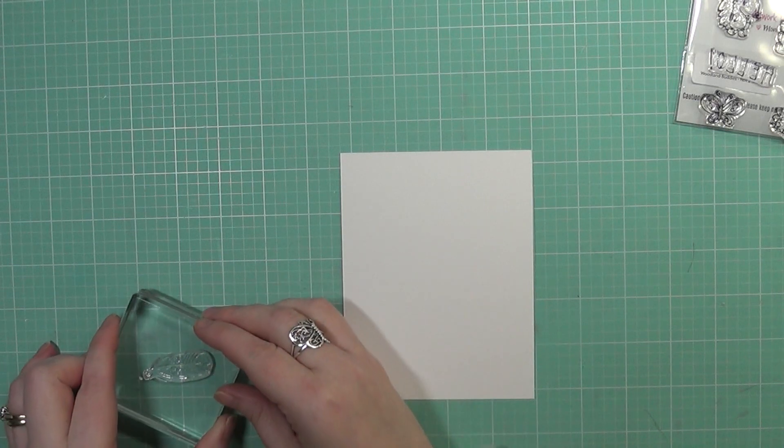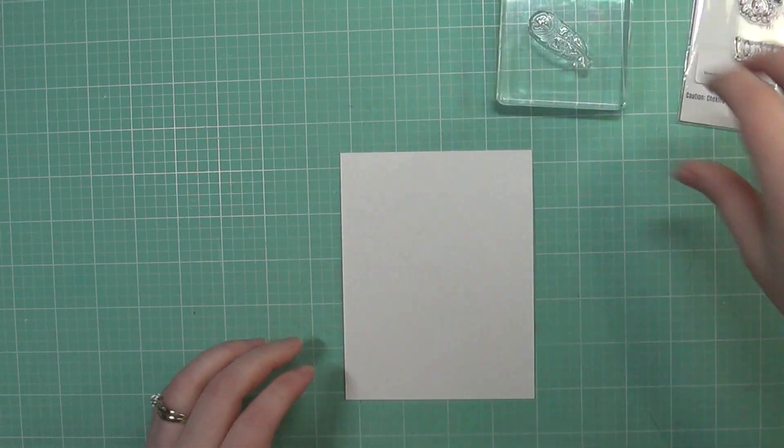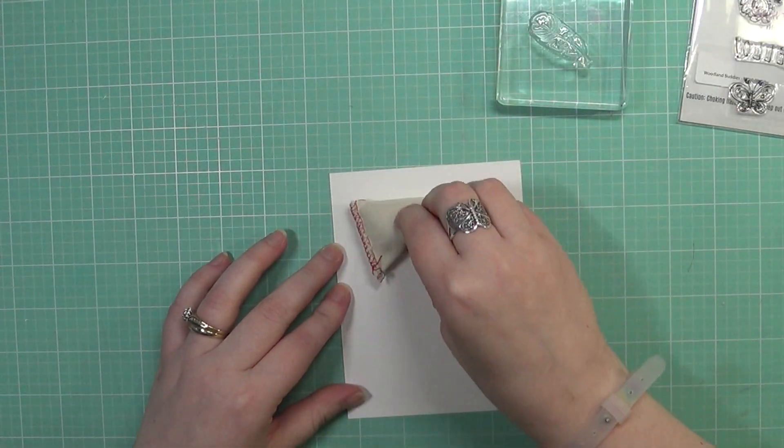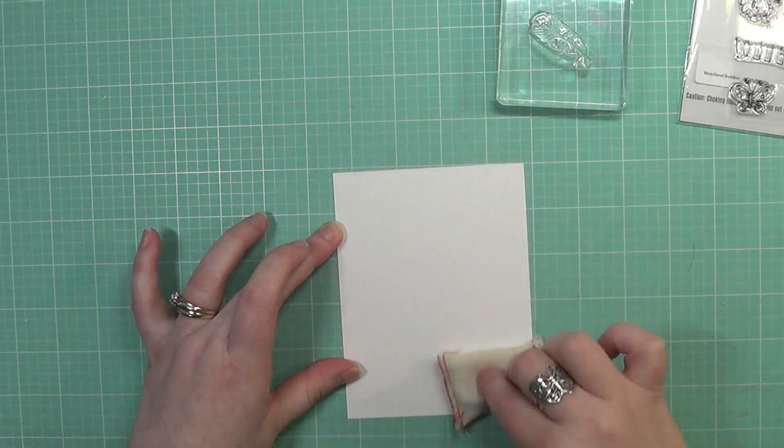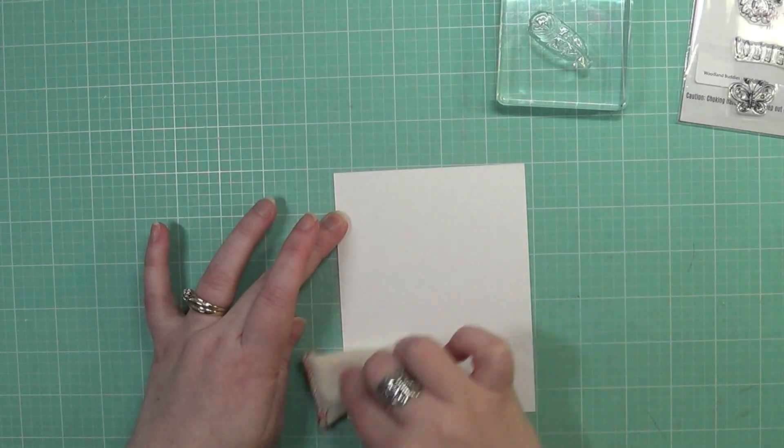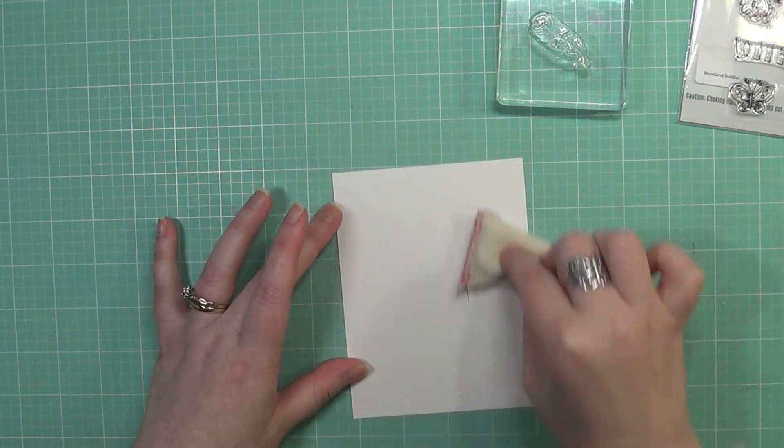I'm going to take this feather stamp here and put it on my acrylic block. I'm going to prep my cardstock, this plain white cardstock, with my anti-static powder tool here, my little powder bag.